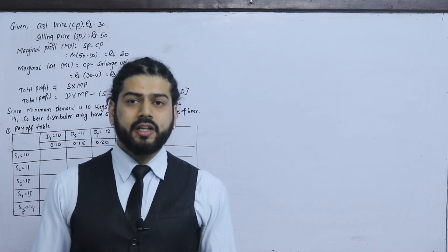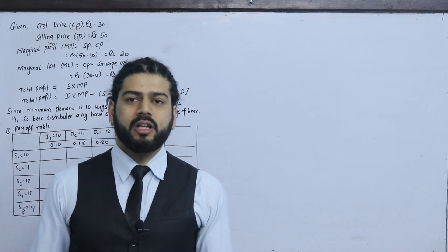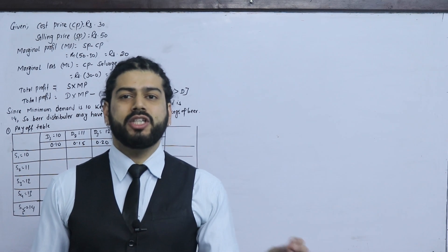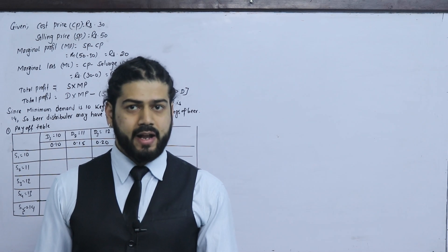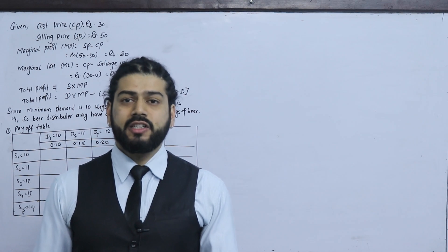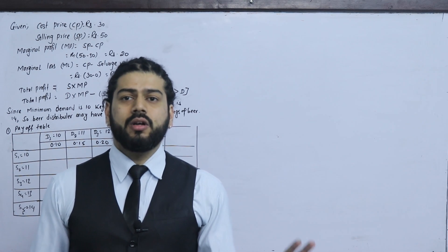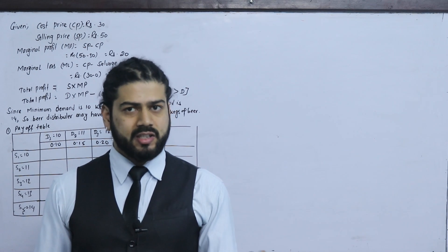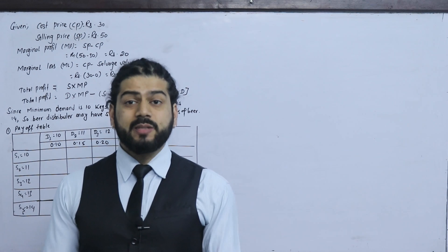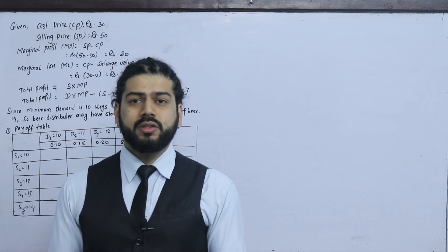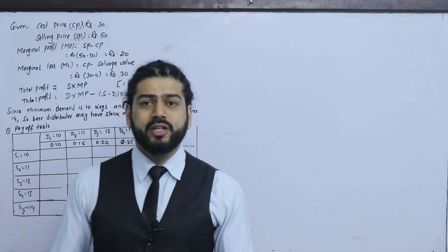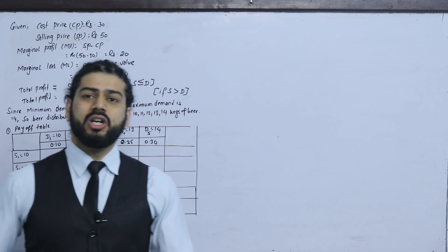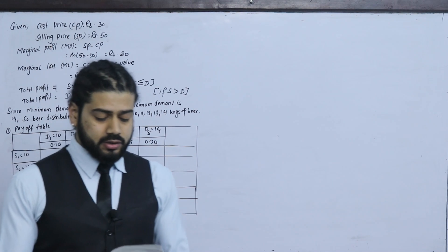In the previous class, we covered Decision Making under Uncertainty, which means probability is not known. The three criteria are Maximax, Maximin, and Minimax Regret. If there is probability known, then the question is solved differently.